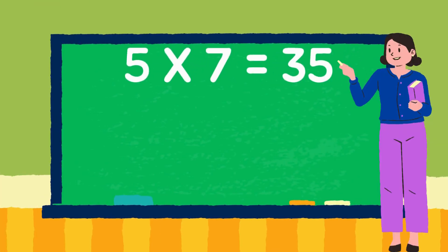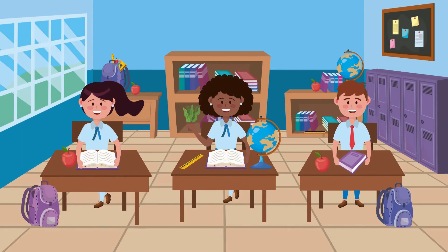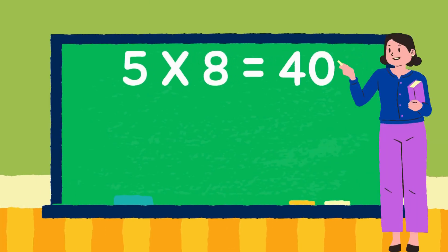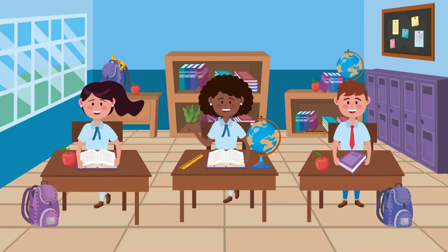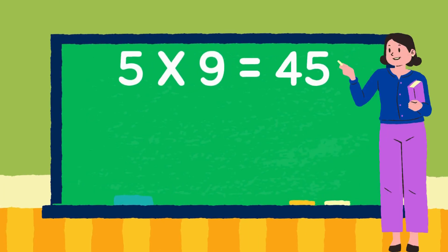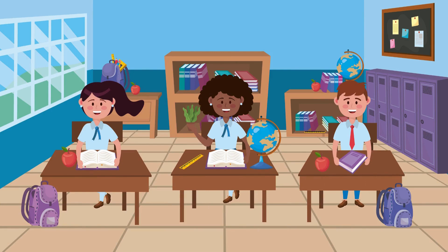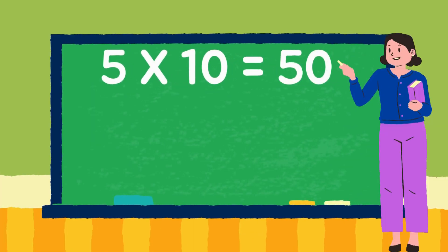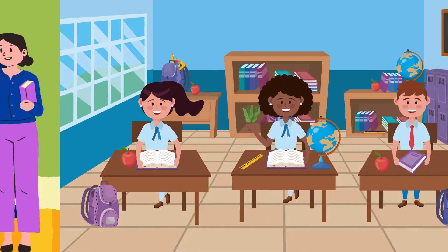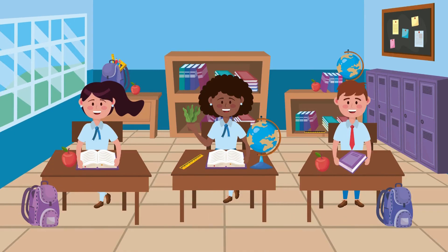5 7 is 35. 5 8 is 40. 5 9 is 45. 5 10 is 50.